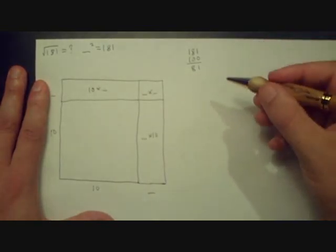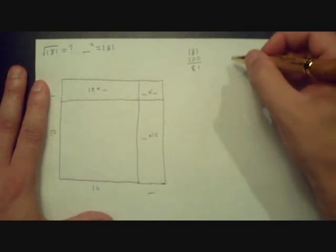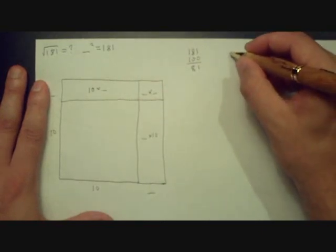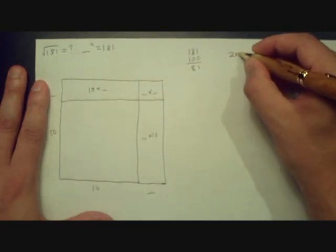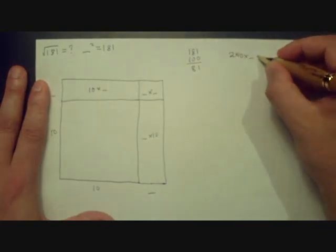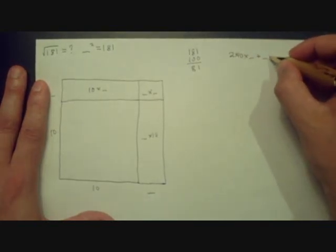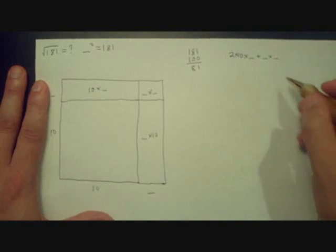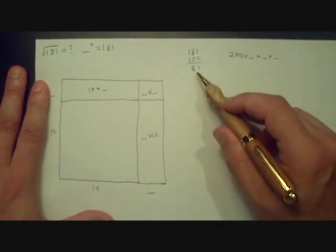And so, these two are the same, and so I can look over here and say maybe it's 2 times 10 times blank, plus blank times blank. And so, what I want is this sum to be approximately 81.